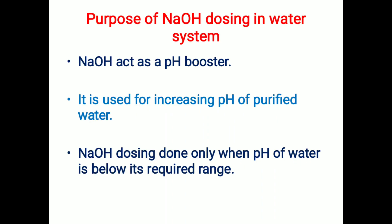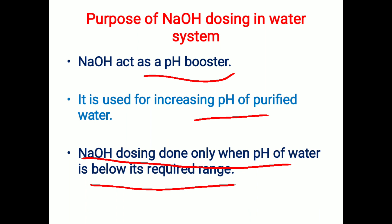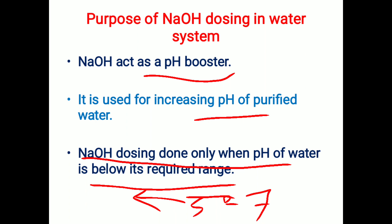First, we'll see the purpose of sodium hydroxide dosing in a water system. Sodium hydroxide acts as a pH booster — it is used for increasing the pH of purified water. Dosing is done only when the pH of the water is below its required range, which is 5 to 7 for purified water in pharma industries. When the pH goes below 5, we start sodium hydroxide dosing to bring the pH back into the required range of 5 to 7. NaOH is an alkaline solution used for increasing pH.